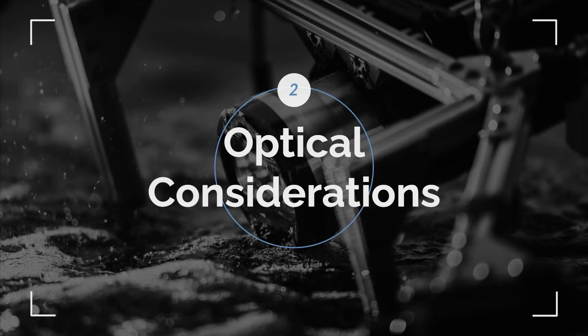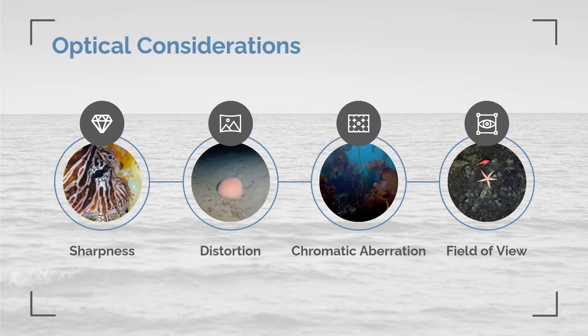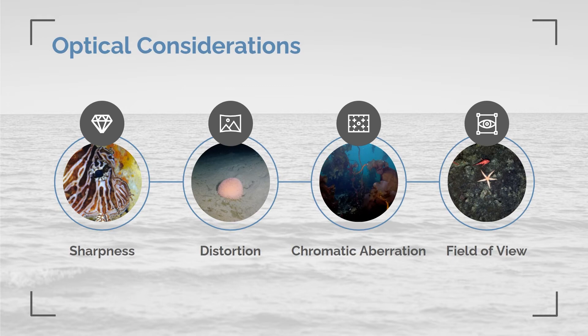A commonly overlooked aspect of underwater imaging is the lens and optical parameters. When choosing a camera, technical specifications such as resolution, size, and weight are the first considerations, but the optical parameters can have a much higher impact on image quality than even the sensor size or resolution. Sharpness is often the most important factor in an imaging system — it is the variable that determines the resolving power, often expressed in millimeters per pixel, similar to the DPI of a printed photo. The sharpness is much higher in a water-corrected lens, and sharp images have more detail, which is particularly important for applications like photogrammetry, 3D modeling, machine vision, or object detection.